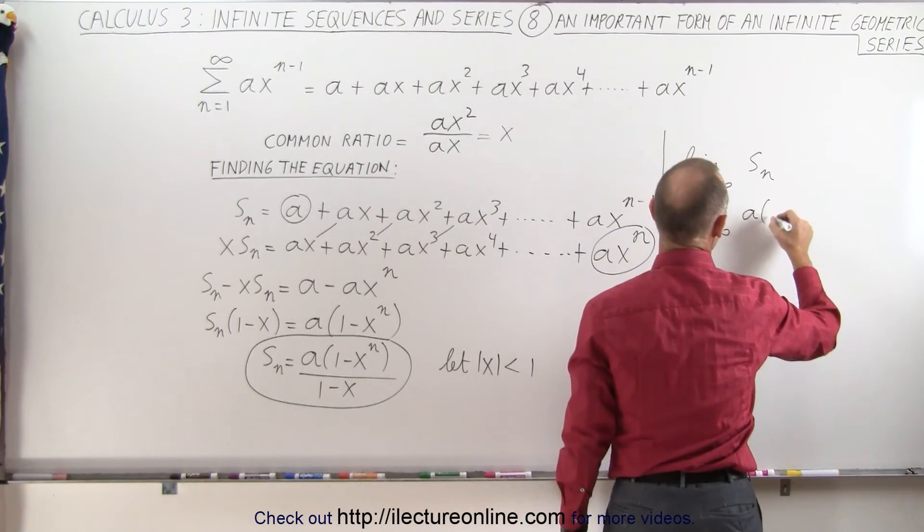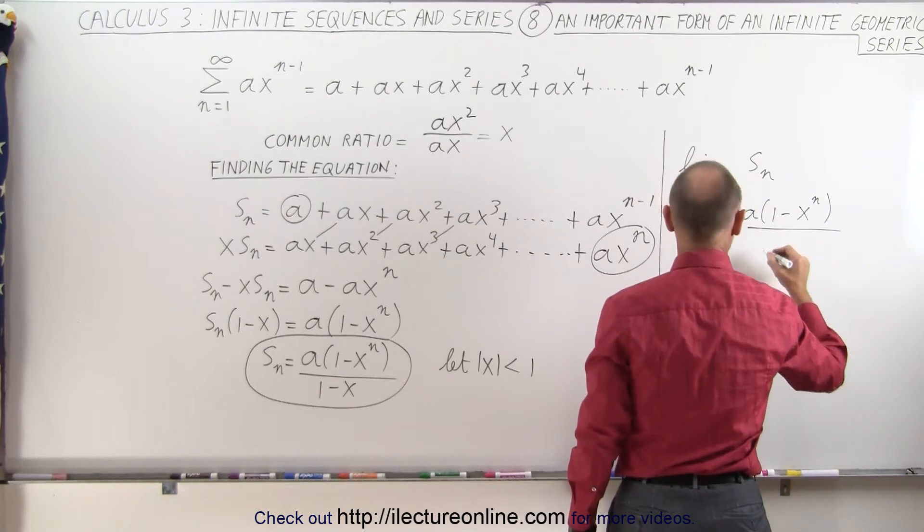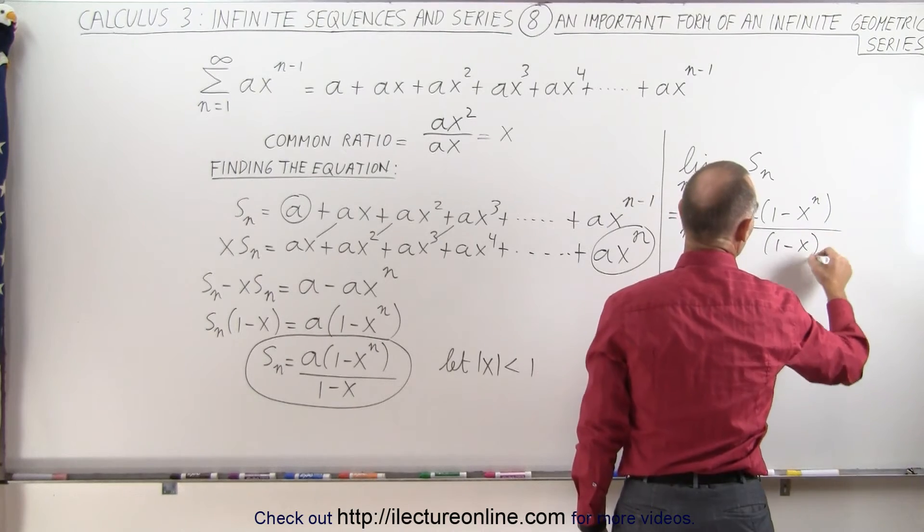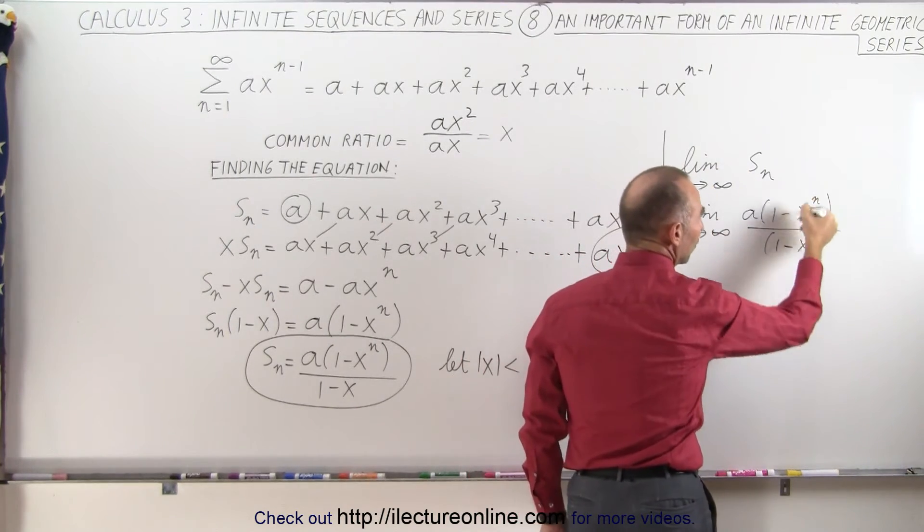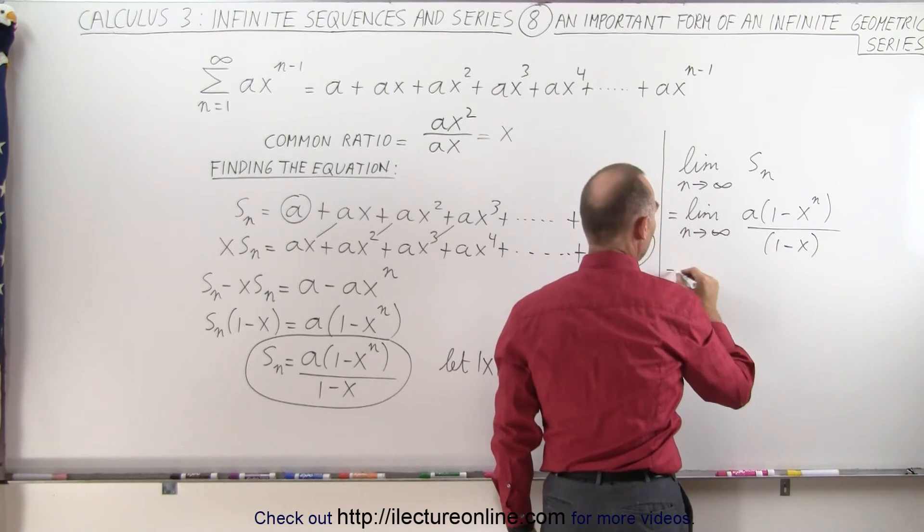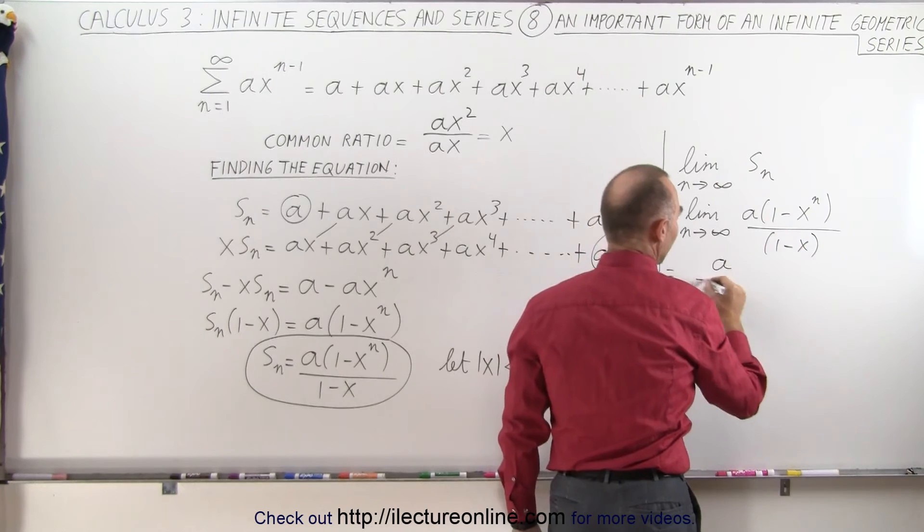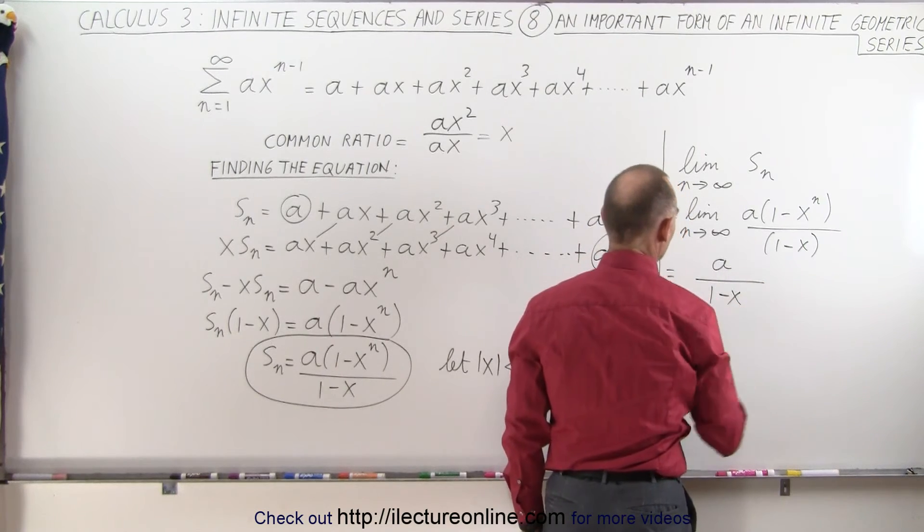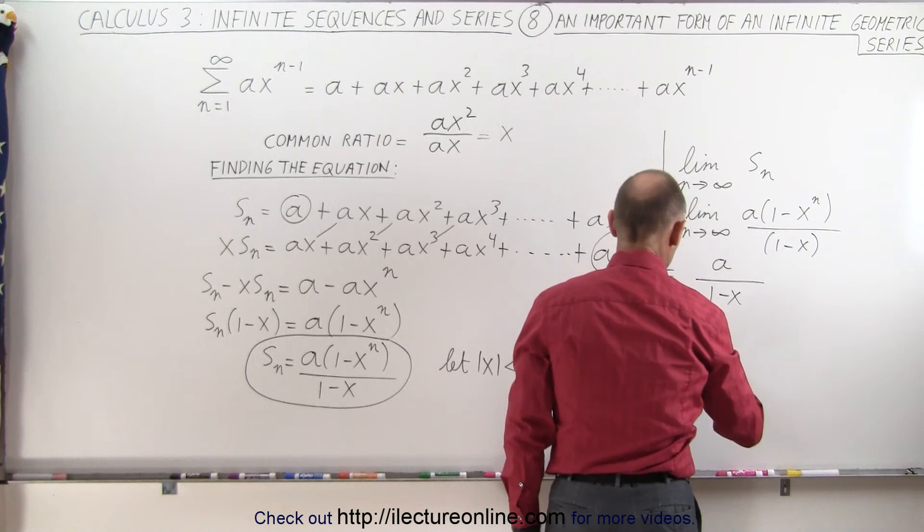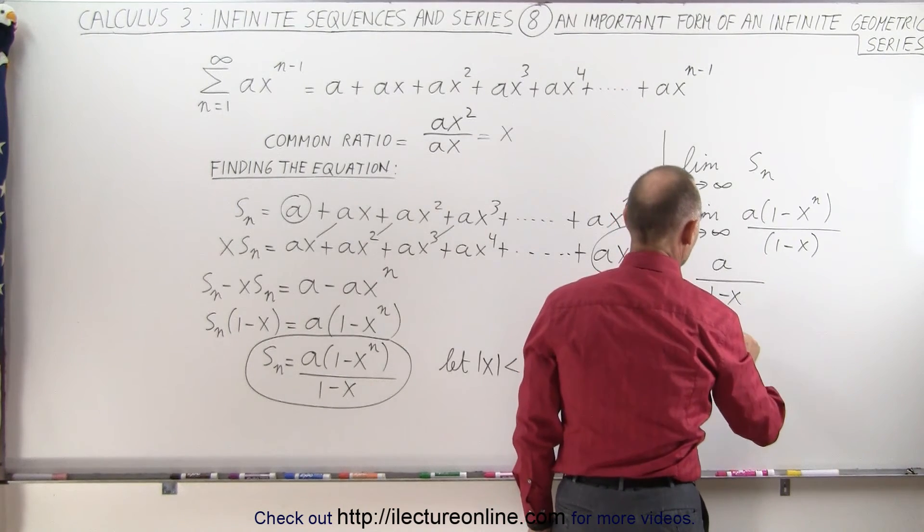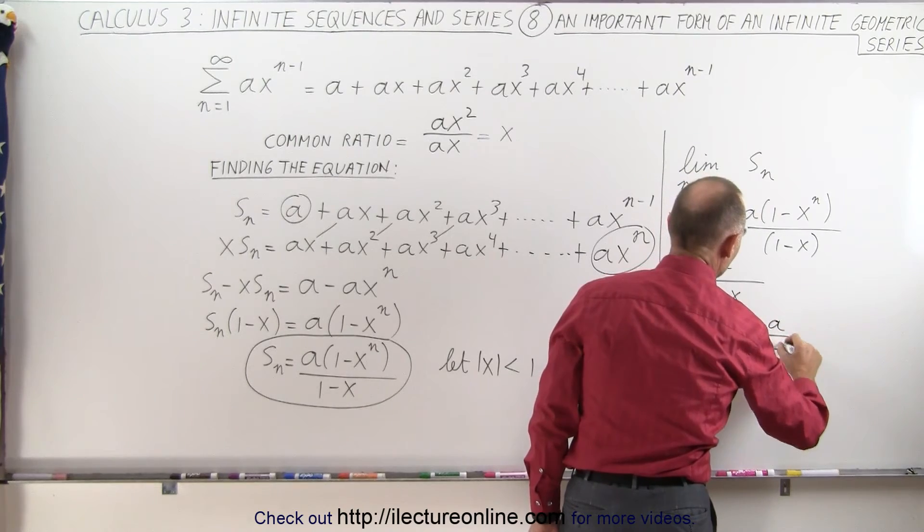Which is a times 1 minus x to the n power divided by 1 minus x. And of course, in the limit as n goes to infinity, this quantity goes to 0, and then I end up with, in the numerator, a times 1 divided by 1 minus x. And so I can say that in the limit as n goes to infinity of s sub n, that is equal to a over 1 minus x.